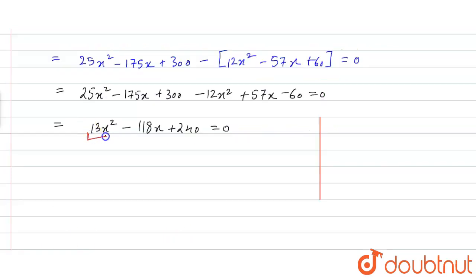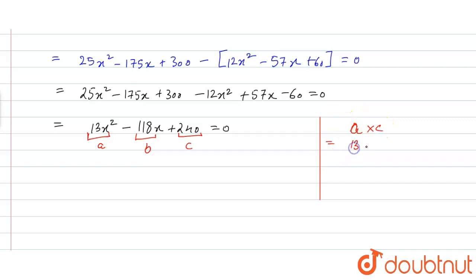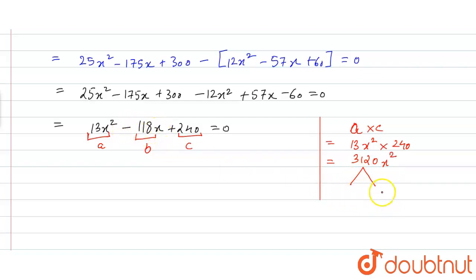Here, a is 13, b is minus 118, and c is 240. For factorization, we split the middle term such that a into c equals 13 times 240 equals 3120. We need two terms whose product is 3120 and whose sum equals minus 118.